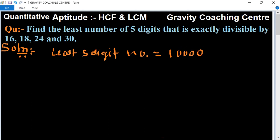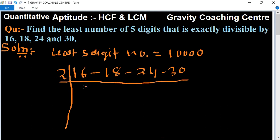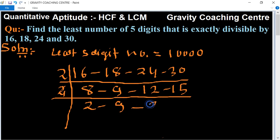And now find the LCM of 16, 18, 24, and 30. Divisible by 2: 8, 9, 12, 15. Again divided by 4: 4, 2, 8, 9, 4, 3, 12, and 15. And now divided by 3: 2, 3, 1, 5.